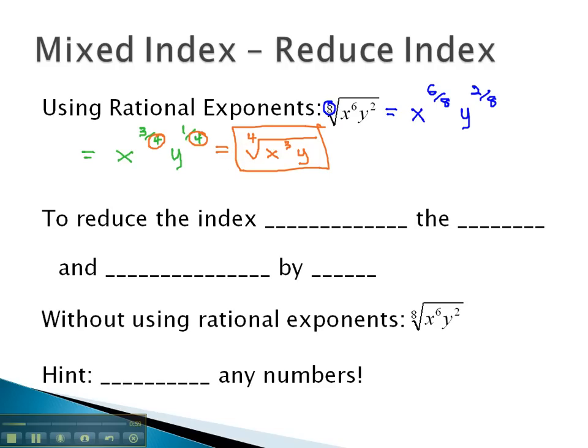The way we reduce the index is we divide both the numerator and denominator by the same thing. The denominator is the index, and the numerator are our exponents.